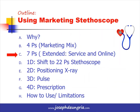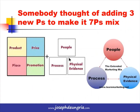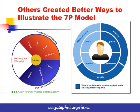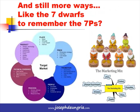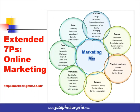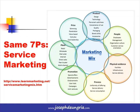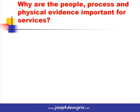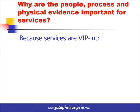Then there were the 7Ps, also called the extended marketing mix. Aside from the 4Ps, the argument was there are three additional Ps which are very important: people, process, and physical evidence. The extended marketing mix is useful for online marketing where people, process, and physical evidence are as important as the original 4Ps, and they are also very important in service marketing.